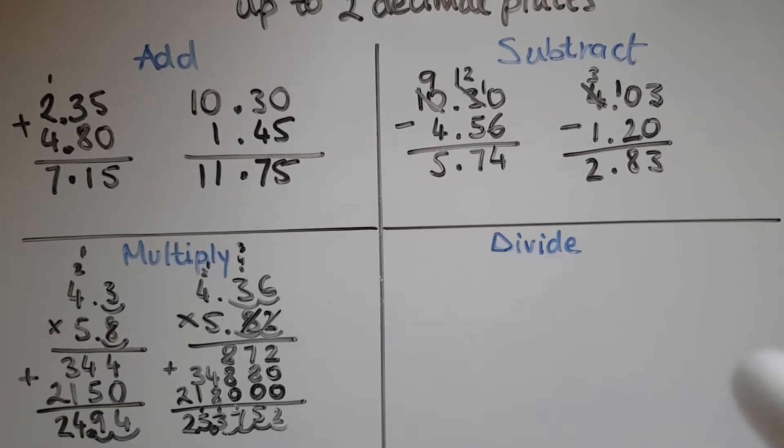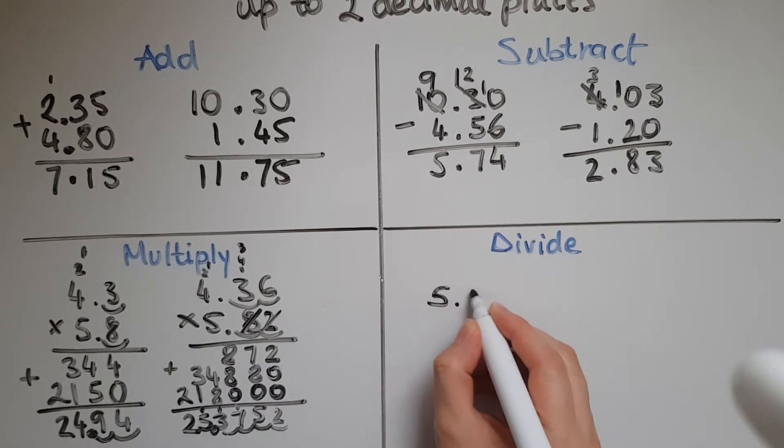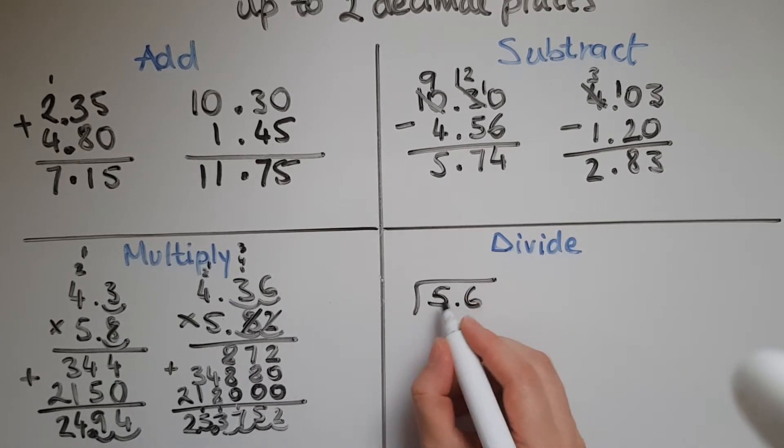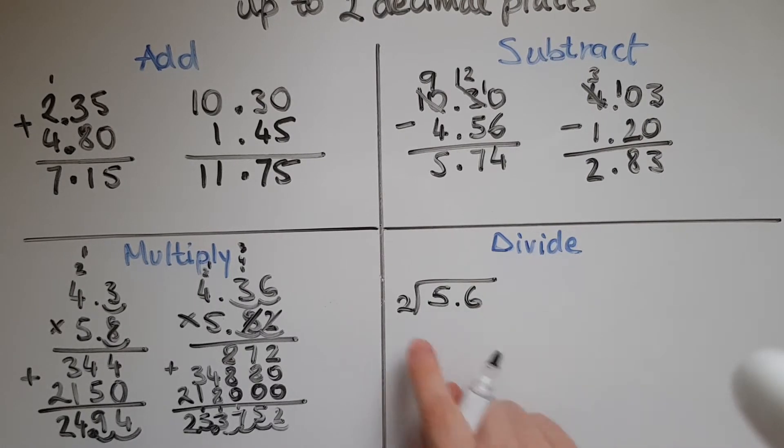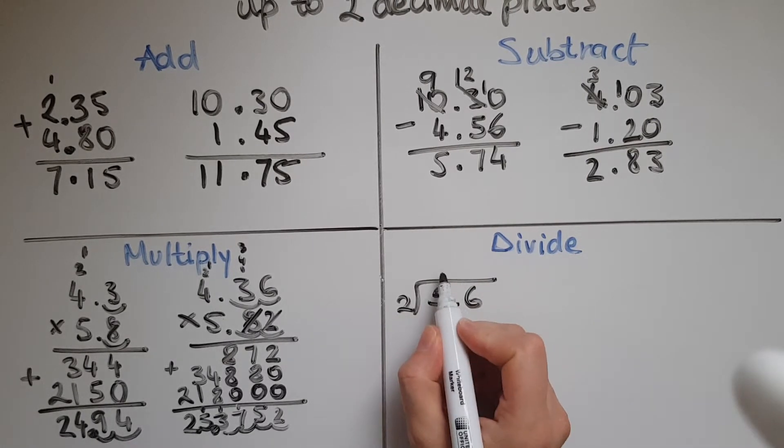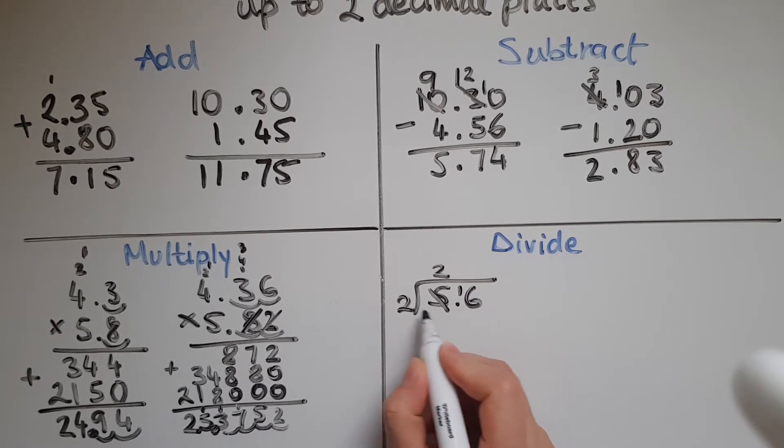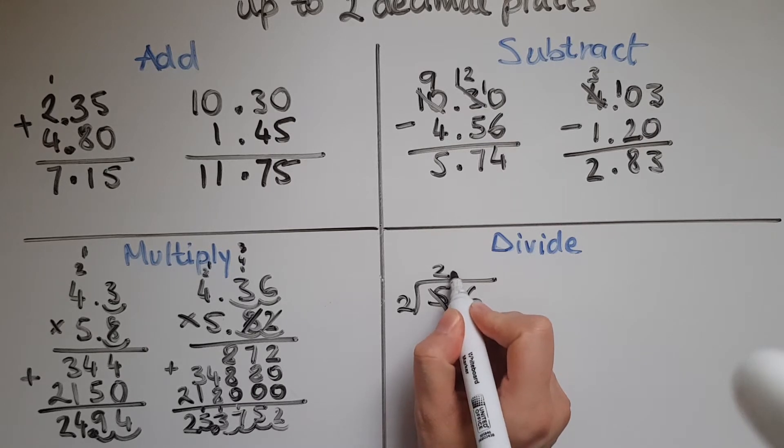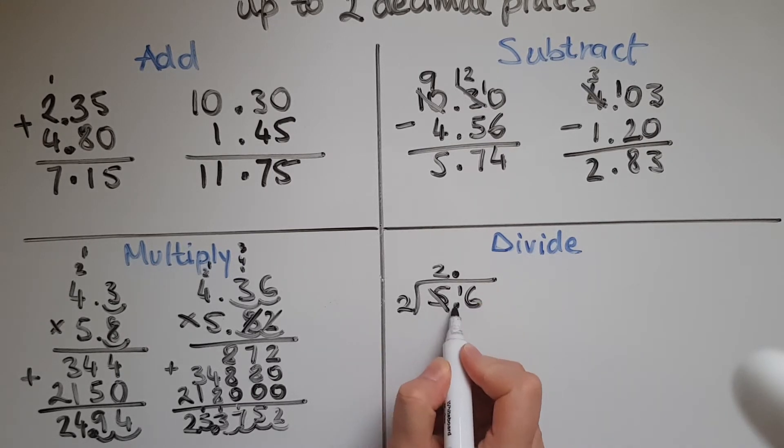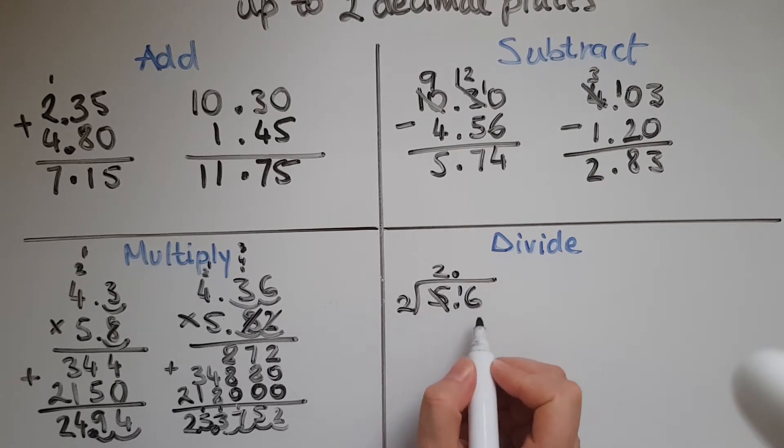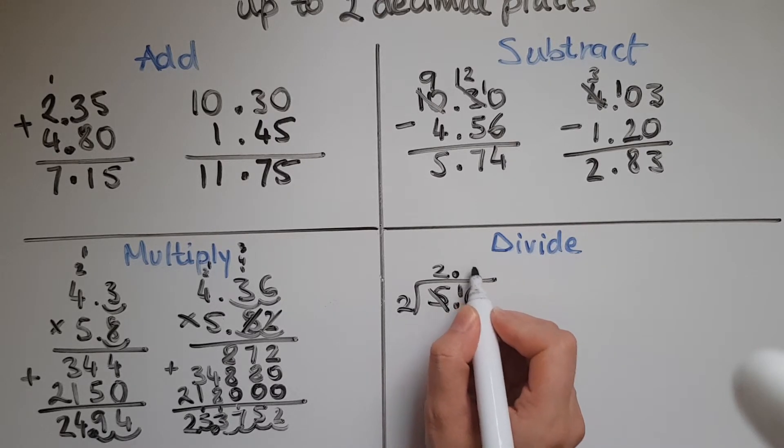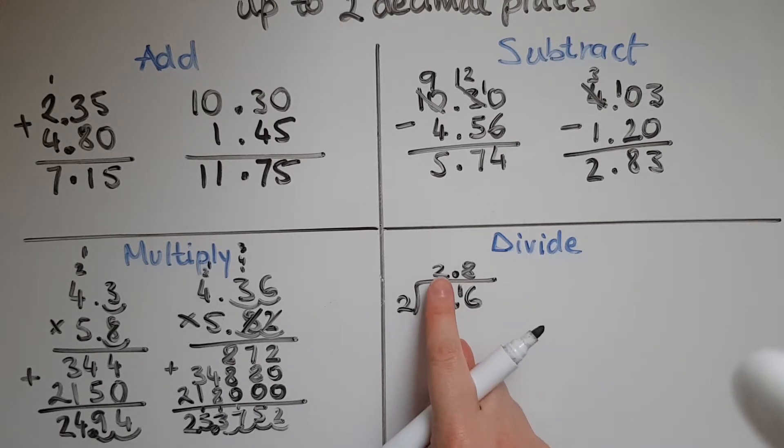We'll now look at dividing decimals. So if you have 5.6 divided by 2, we're trying to fit 2 into 5 and that fits twice and there is 1 remaining. Now at this point where we finished with a digit and we've got a decimal point, that's when we transfer the decimal point to the answer as well. So I finished with a 5 and I transferred the decimal point over there after the 2. Now I've got 16. So how many twos fit into 16? And that is 8 of them. So the answer is 2.8.